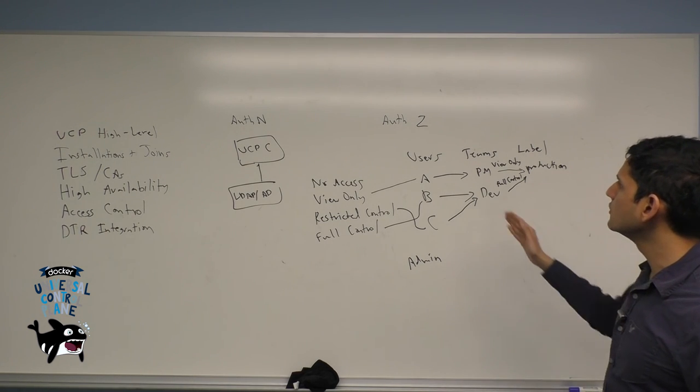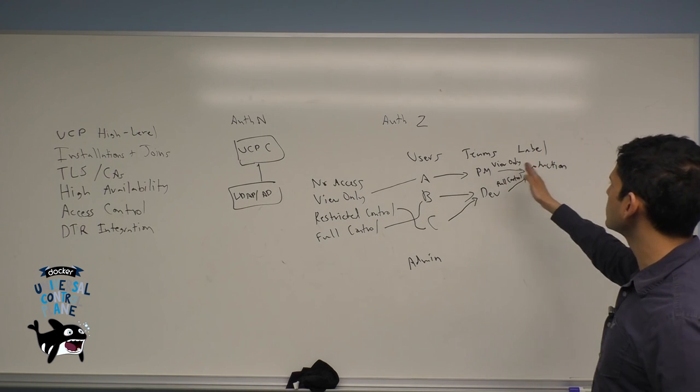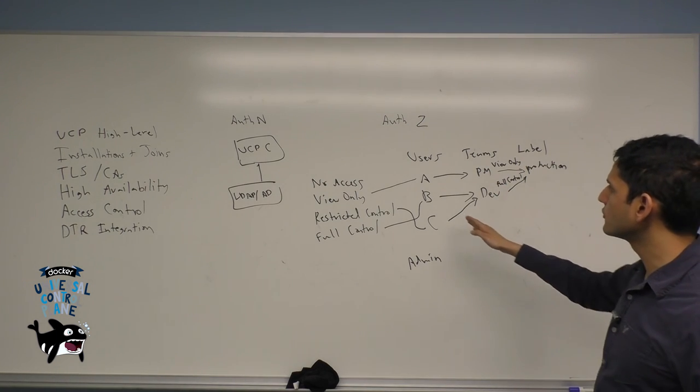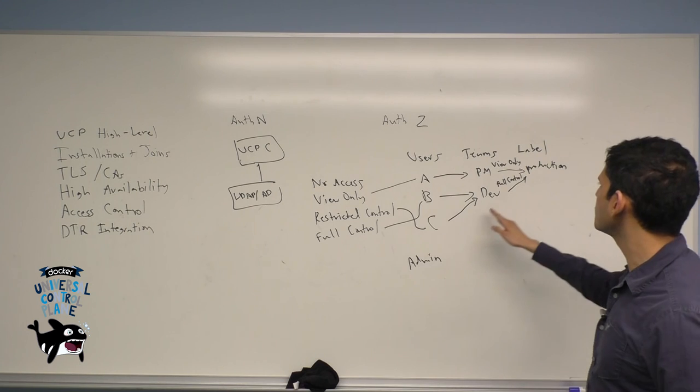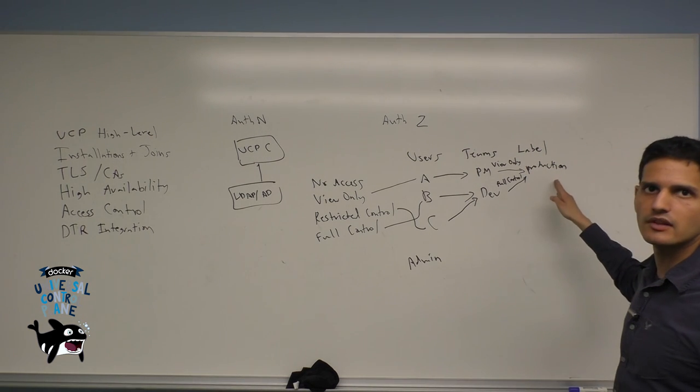Users B and C, who have differing levels of access to most resources, both have full control as part of the dev team to any containers with the label production.